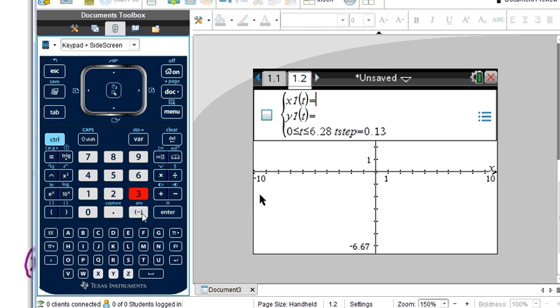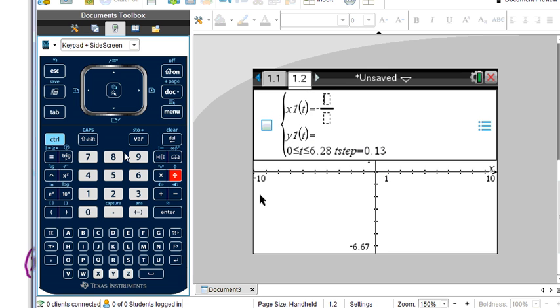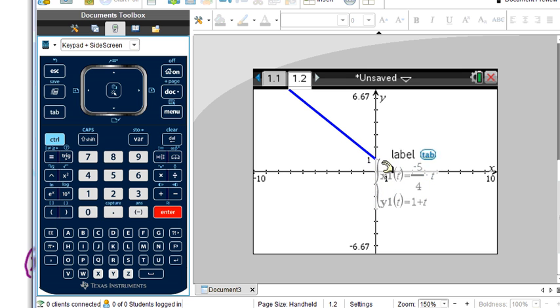Okay, so negative 5 fourths T, and down here for y, we put 1 plus T. Now, sometimes we have our steps from 0 to 2 pi. That can mess us up. But I hope we'll see enough to know we have the same equation. Yeah, we see so far as it goes the same equation, don't we?